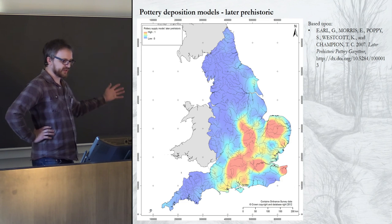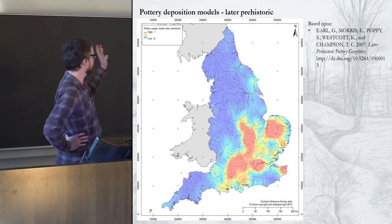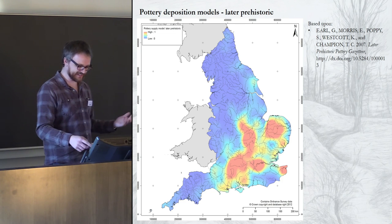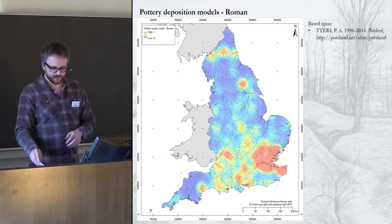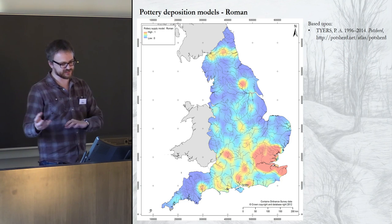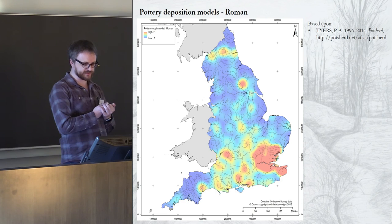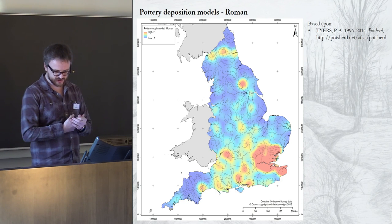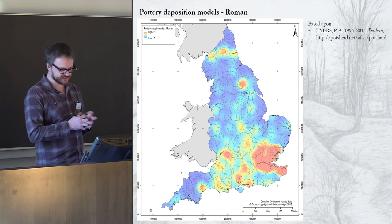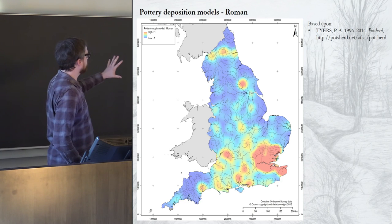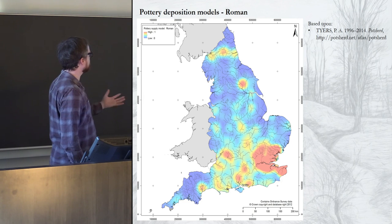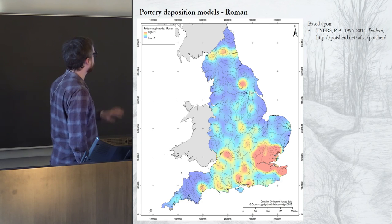Again we see the same pattern of there being much more pottery use in the later prehistoric period in the southeastern half of the country, though this model is also influenced by the affordance model because you need to be digging to find pots. For the Roman period, the model is a little different because of the nature of the only dataset that really exists — a website maintained by Paul Tyers called PotSherd — which maps different ware types across the country. This map shows the variety of Roman pottery across the country rather than the numbers of sherds, so the redder areas have more wares being deposited and the blue areas very few.